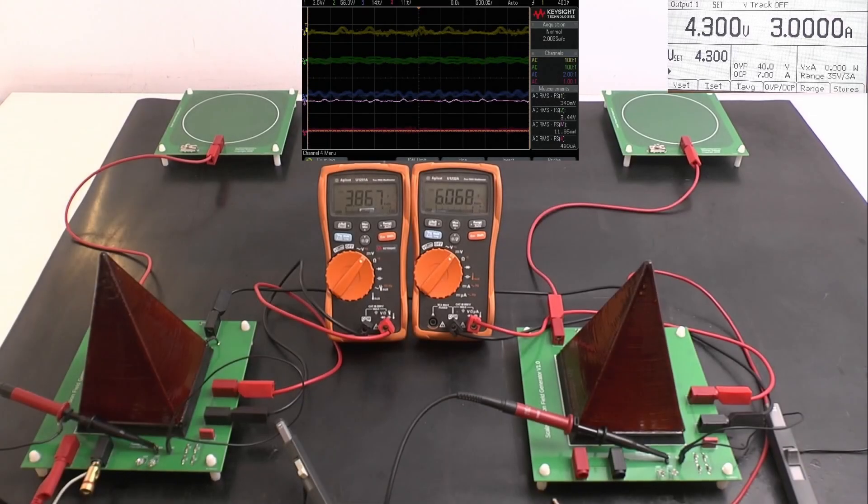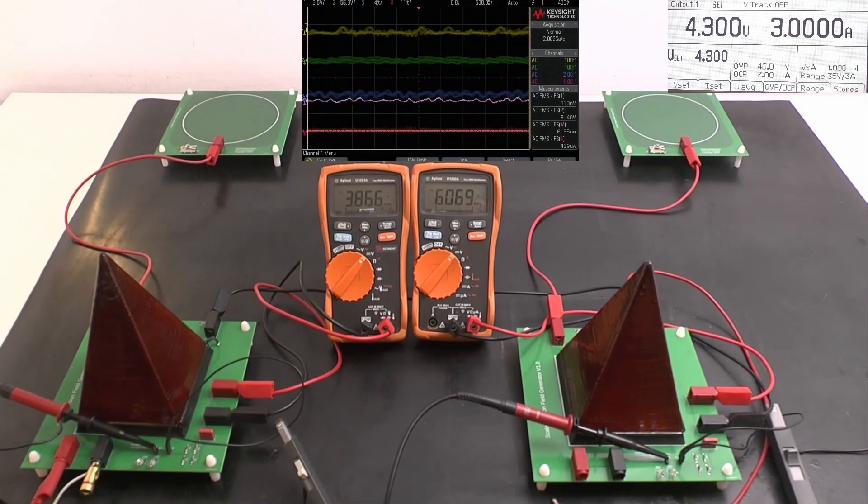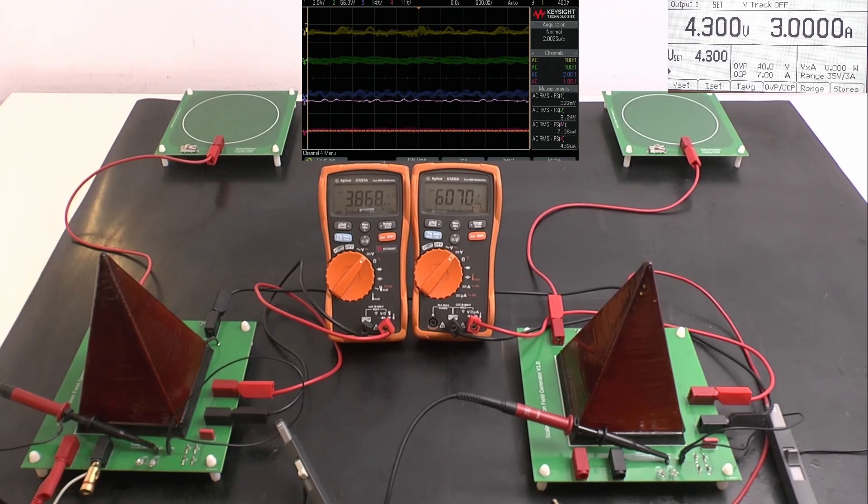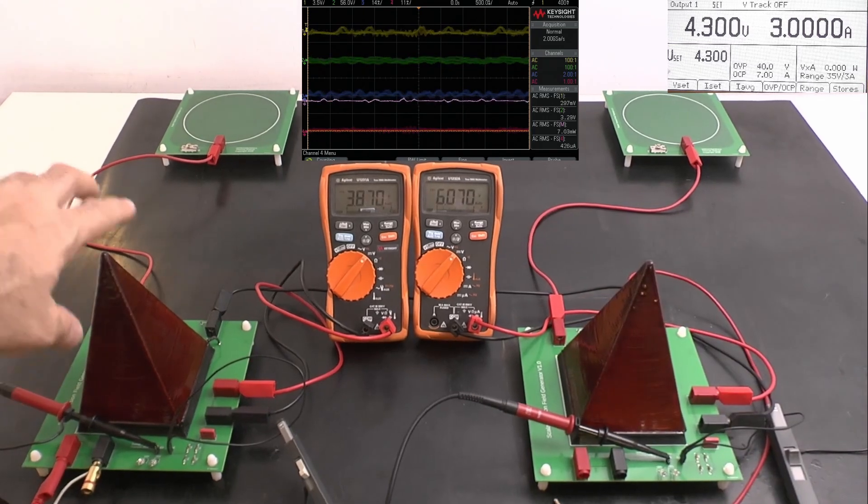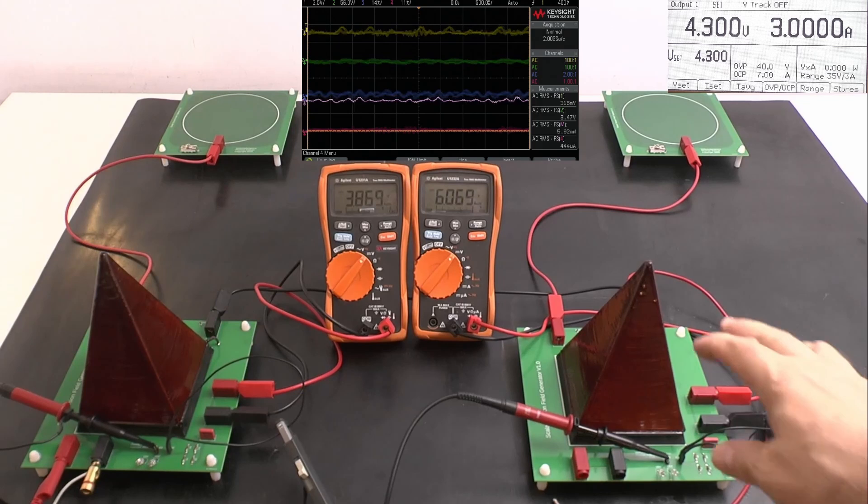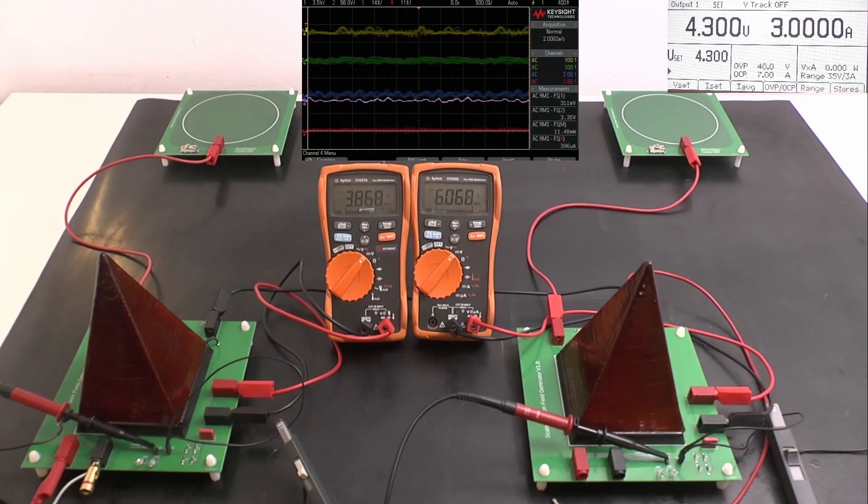I have now changed the system to the scalar torsion field. And we're going to repeat the experiment we have done before with the scalar wave system from Dr. Meiler. So the frequency is the specific frequency we're using. Only at this frequency it will work. Currently you see on the DMM from the transmitting side 3.8V and around 6V on receiving side. This comes from the driver which is currently already running to the amplifier. So I'm going to energize that now. We have 43V.